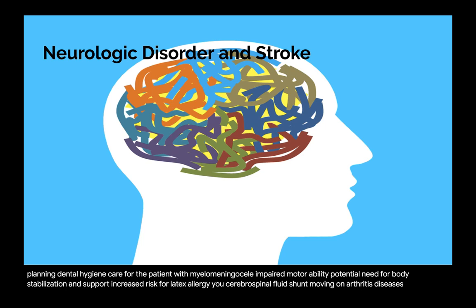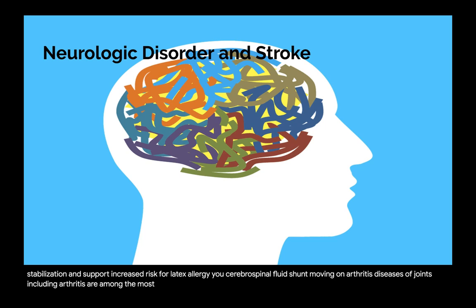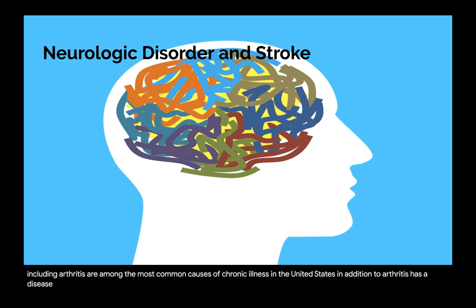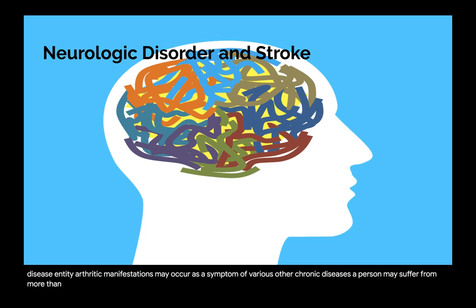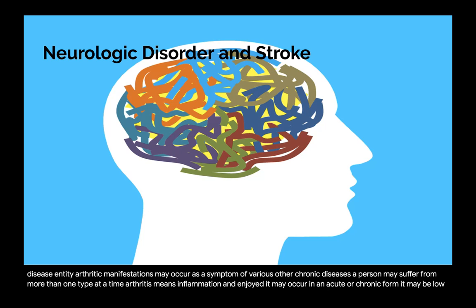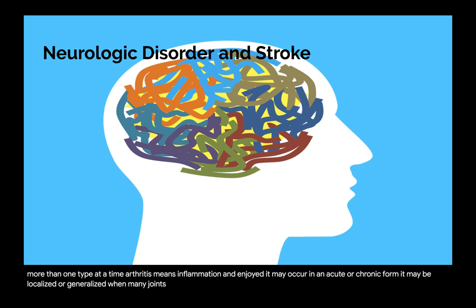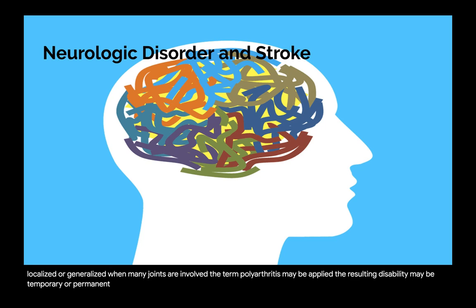Diseases of joints, including arthritis, are among the most common causes of chronic illness in the United States. Arthritic manifestations may occur as a symptom of various other chronic diseases, and a person may suffer from more than one type at a time. Arthritis means inflammation in a joint; it may occur in acute or chronic form and may be localized or generalized. The resulting disability may be temporary or permanent, partial, or complete.